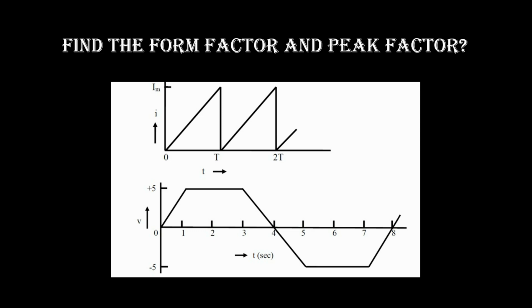Now let us go to the problem. Find the form factor and peak factor for the following two waveforms: the sawtooth waveform and the trapezoidal waveform. This is the sawtooth waveform. The base for this curve is T, and the shape is a triangle.